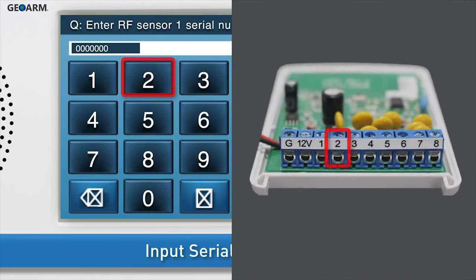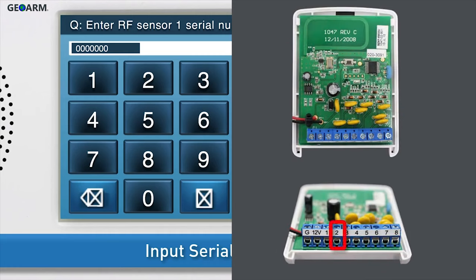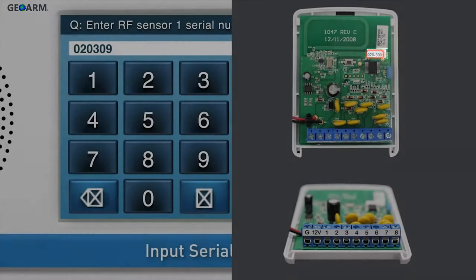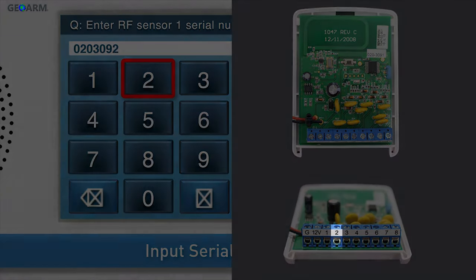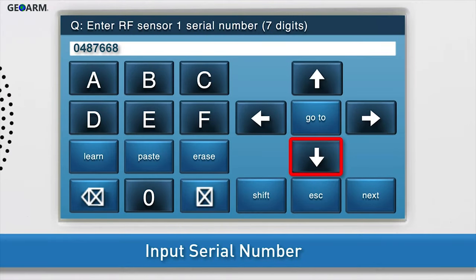Then, type the input number you are currently programming. In this example, we are programming input 2 on the takeover module, so we will type 0, 2, 0, 3, 0, 9, which are the first six digits of the serial number, and then 2, which is the input number. Press the down arrow to go to the next sub-question.